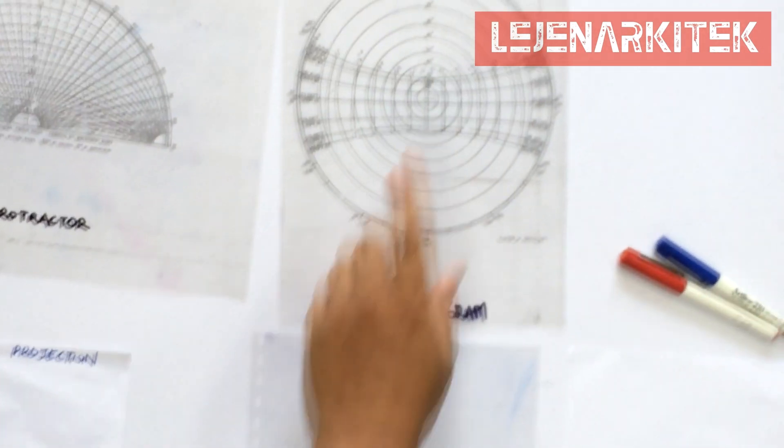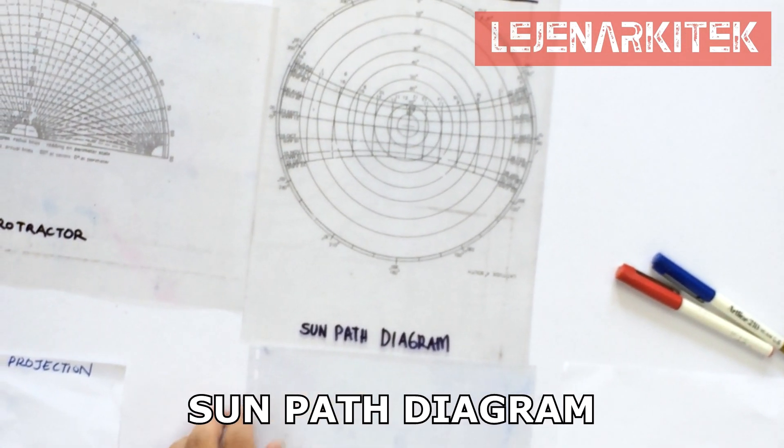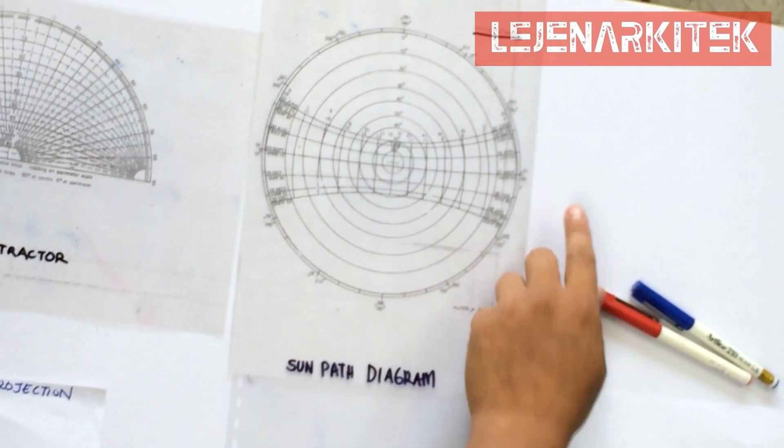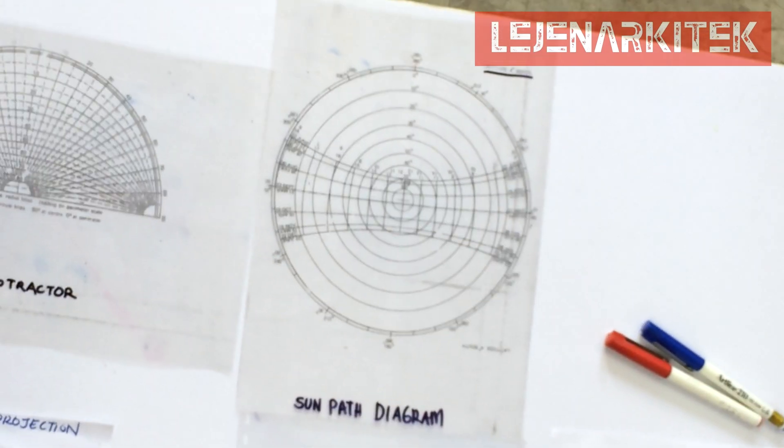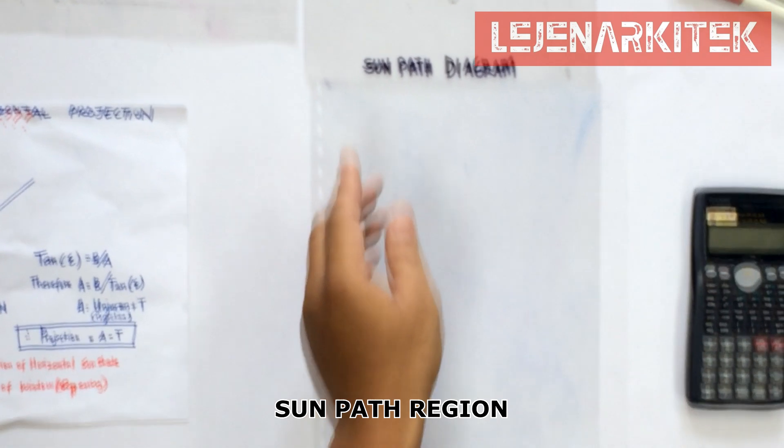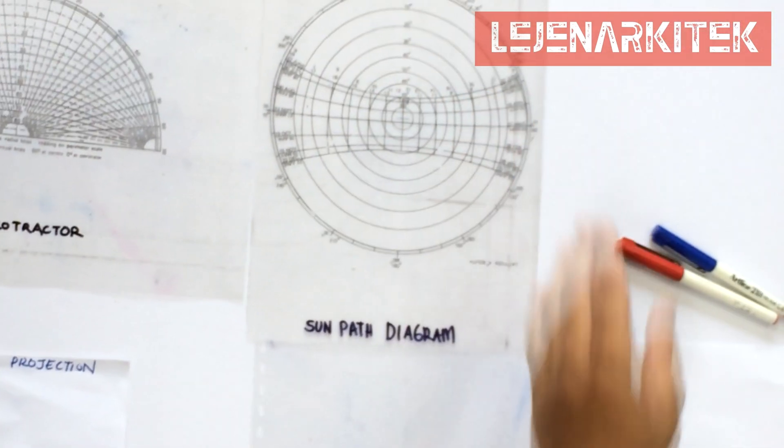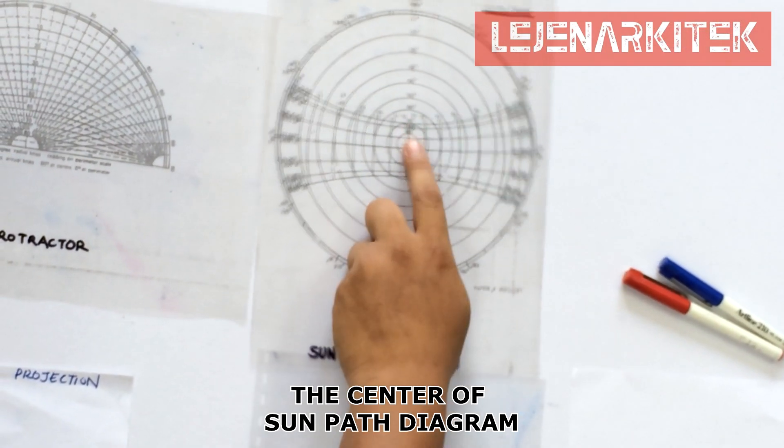Second, you will need to have a sun path diagram with north, east, west, and south, and also the sun path region. You might want to take note the center of the sun path diagram.